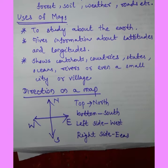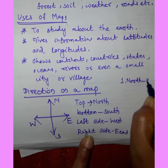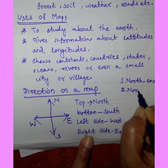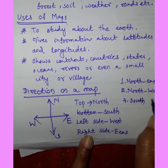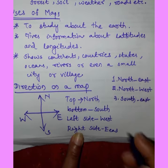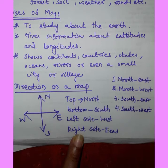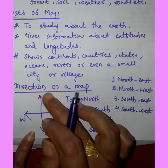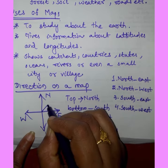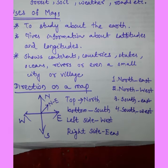There are also four sub-directions or intermediate directions. They are north-east, north-west, south-east, and south-west. North-east is between north and east. North-west is between north and west.